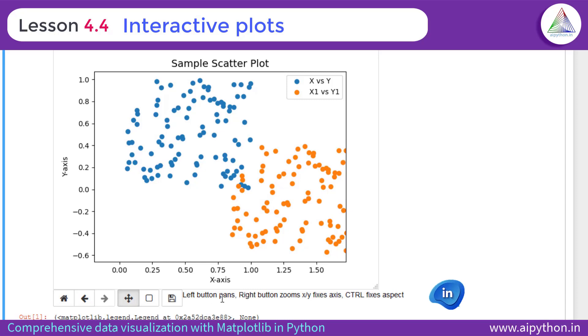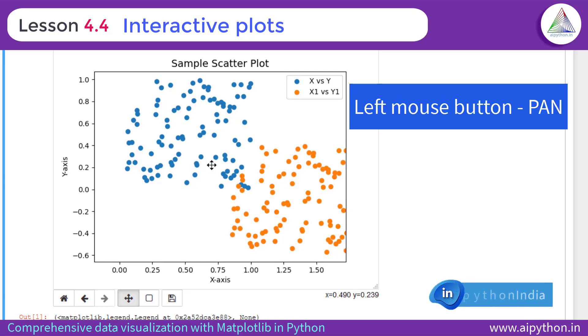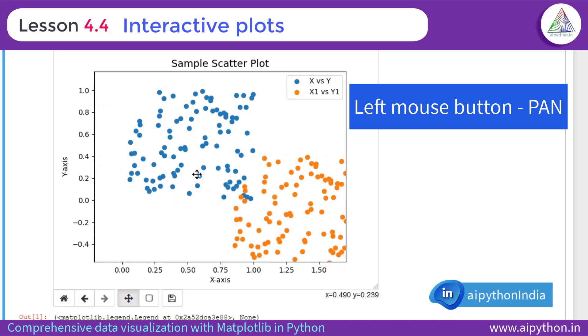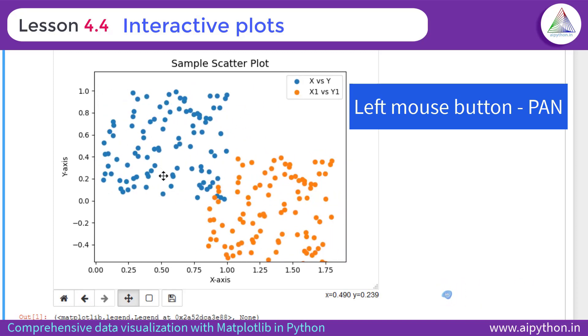So I have clicked on left button and when I'm clicking left button and dragging left and right, it is panning basically across X axis and Y axis.